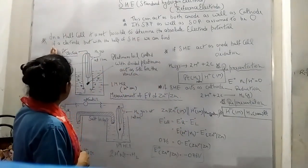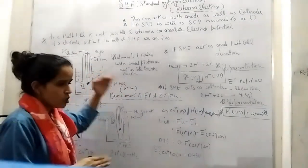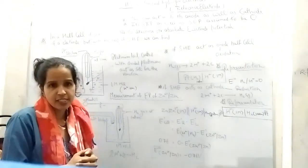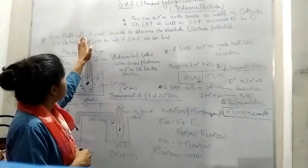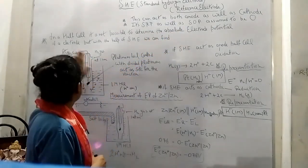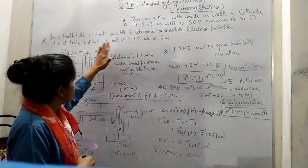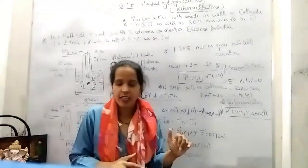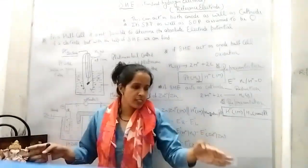The one point I have written here is that in a half cell, when we have studied about the galvanic cell, it is not possible to determine the absolute electrode potential of an electrode.